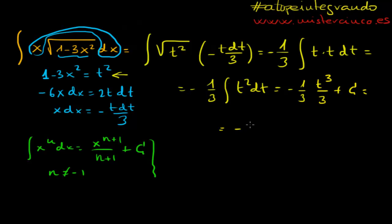So this, at the end of the day, this means minus 1 over 9, t cubed plus the constant. So what we have to do here, just to finish the exercise, we have to come back to the x. We have t, and we need x. So, remember,